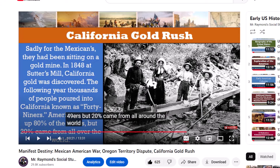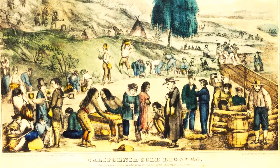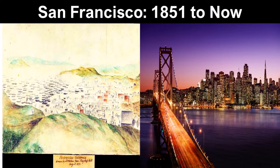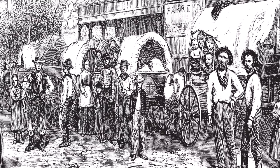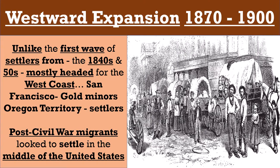We talked about Western migration in our first series, such as the San Francisco 49ers — not the football team, but those who caught gold fever and headed for the region — ultimately creating one of America's most unique cities. And the gold miners will continue to play a role in Western expansion.